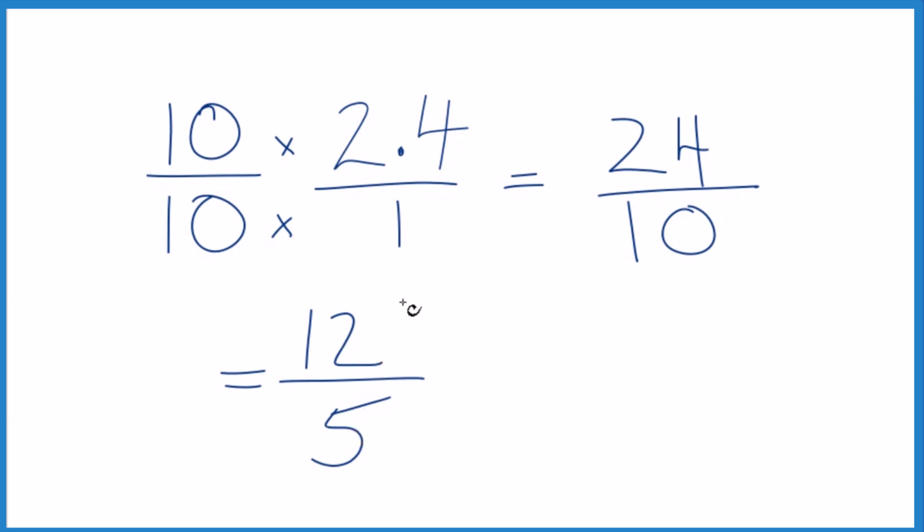This is an improper fraction because the numerator is larger than the denominator, so we could change it to a mixed number or mixed fraction as well. 5 goes into 12, 2 times 5 is 10, so 2 times with 2 left over.